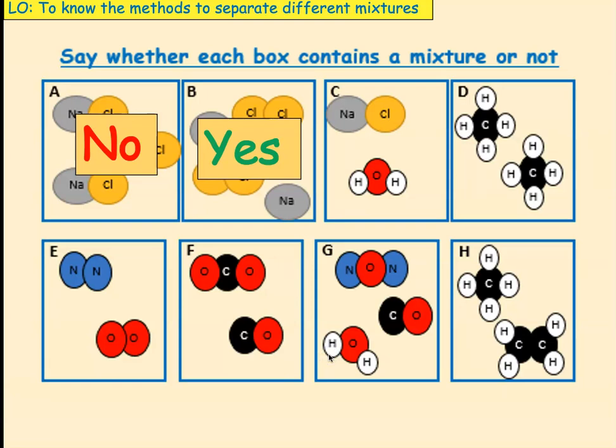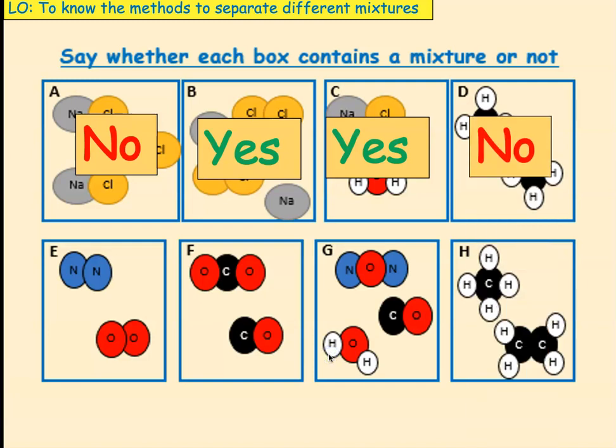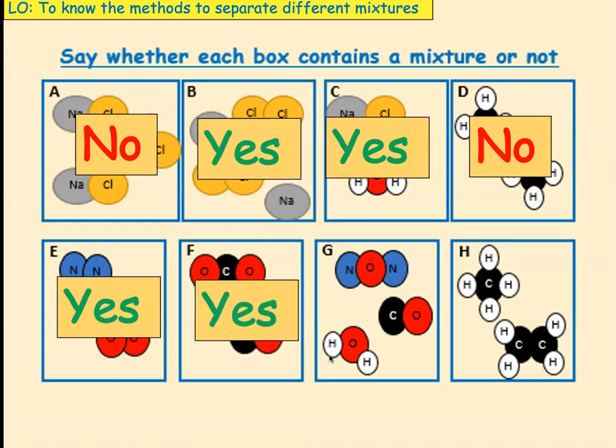Now, the C is quite obvious. That is a mixture. D has got both the same compound in there. So, it is not a mixture. E, yes, it is a mixture. F, you have to look very carefully, but as you can see, there's two different compounds. So, it is a mixture. G is a mixture. And H also, as you can see, two different things. So, they're a mixture.